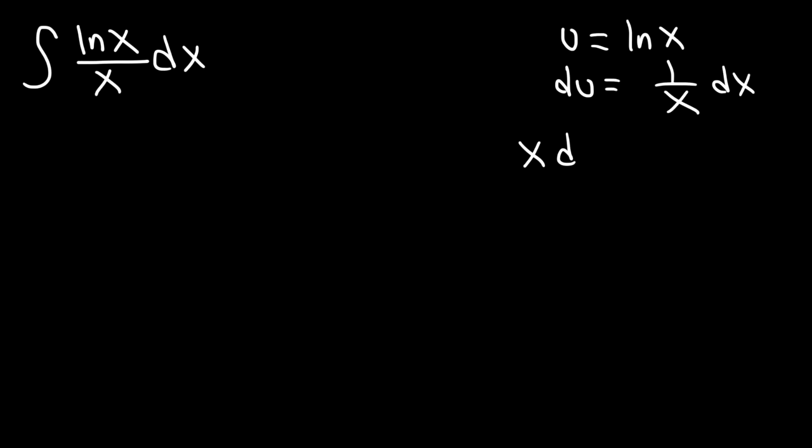So I'm going to have x du equals x times 1 over x times dx. x times 1 over x, x divided by x is 1, so they cancel. Therefore, dx is x du.